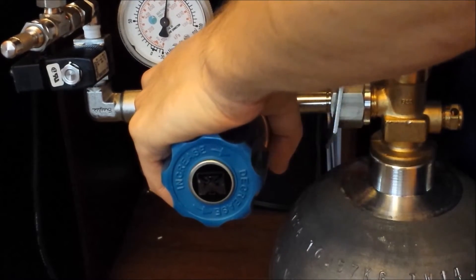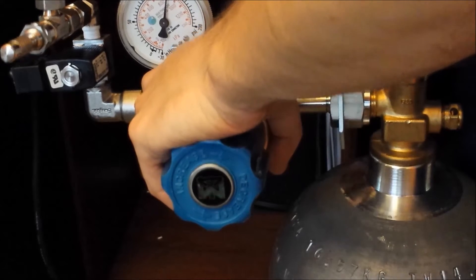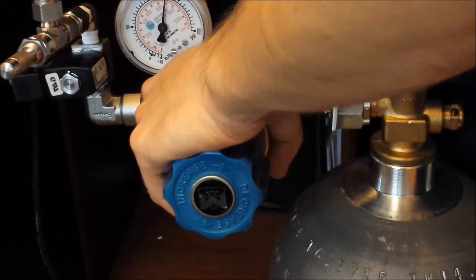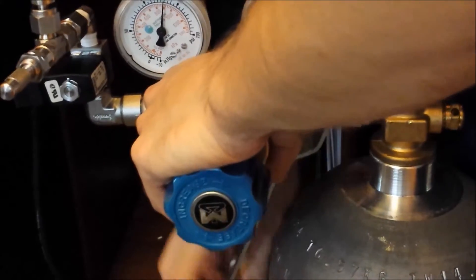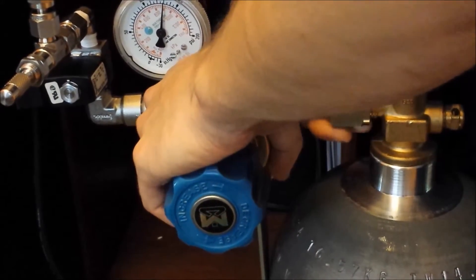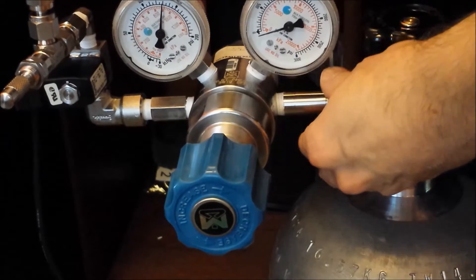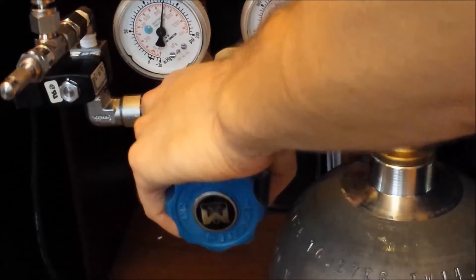As you'll see, once I've got the regulator completely loose and you can actually already see now that that tank is depressurized, the cylinder is depressurized, you can see that that second lower pressure gauge is still holding pressure, which means that the CO2 is isolated in the second stage.